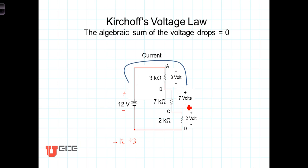Similarly, plus to minus, we're dropping another 7 volts. And then finally, from here to here, we drop another 2 volts. Each of those drops has a positive sign on it. Thus, the algebraic sum of the voltage drops around that closed loop equals 0.